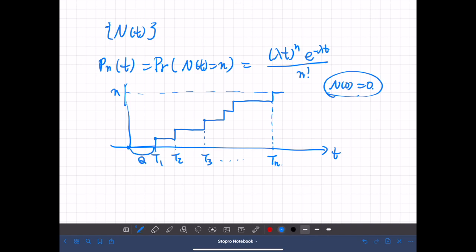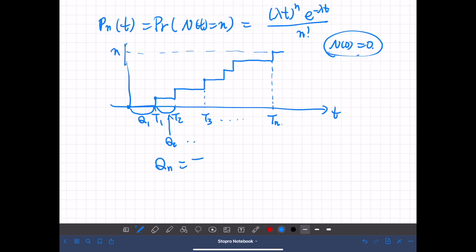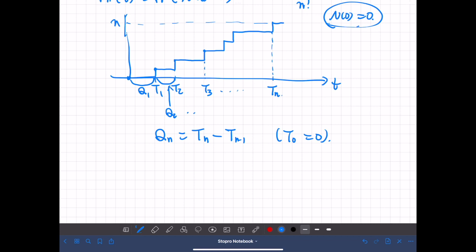So this interval is q1, this interval is q2, and so on. In other words, qn is defined as tn minus tn minus 1. Of course, we assume that t0 is 0. Now what probability distribution does this random variable follow?